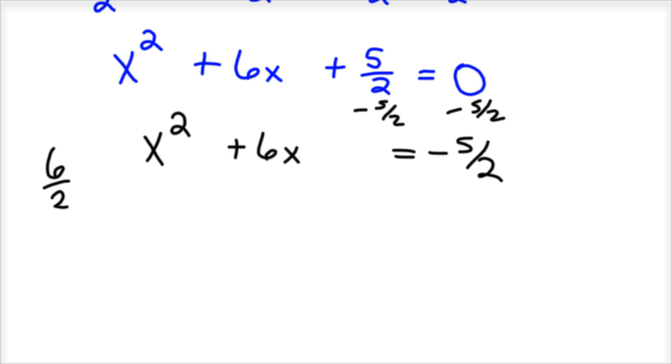So 6 divided by 2 squared is 3 squared, which is 9. So we're going to add 9 to both sides of the equation.